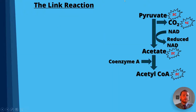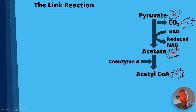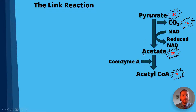In more detail, pyruvate is our three-carbon molecule and it gets converted to acetate, which only has two carbons. The reason we lose a carbon is because CO2 is released — so that CO2 you're breathing out at rest is actually from the link reaction. In this process, NAD gets converted to reduced NAD, which oxidizes the pyruvate. In the next step, coenzyme A is added, and the final product — acetyl coenzyme A, a two-carbon molecule — is formed.